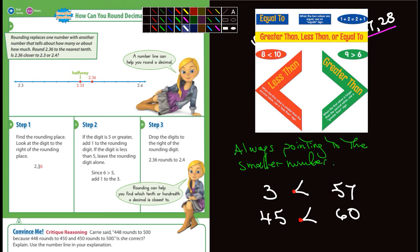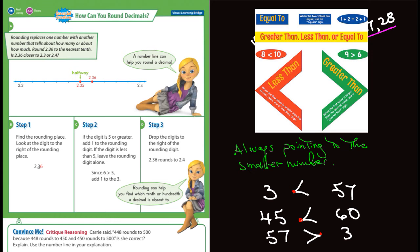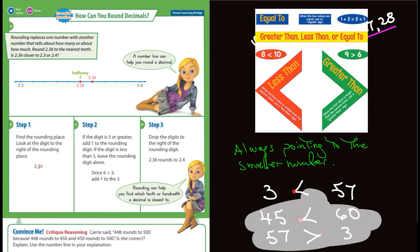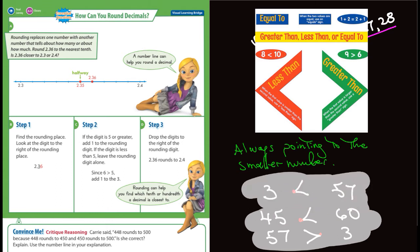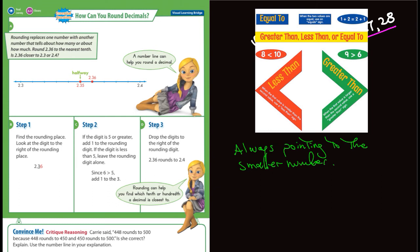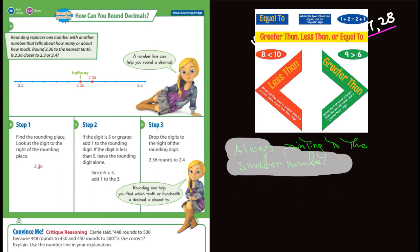How about if I just reverse these? How about if I put 57 over here and 3? So we would write 57 is greater than 3. And again, you can see it's pointing to the smaller number and we're using the greater than symbol. So that will help you guys remember — it's always pointing to the smaller number.